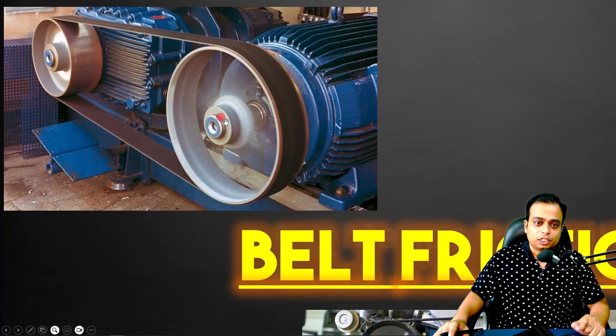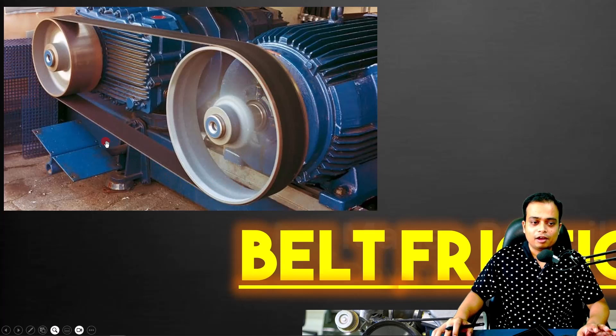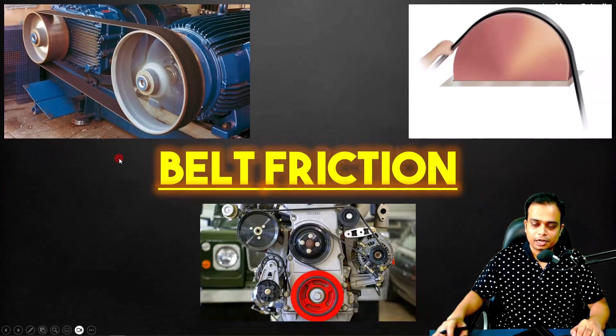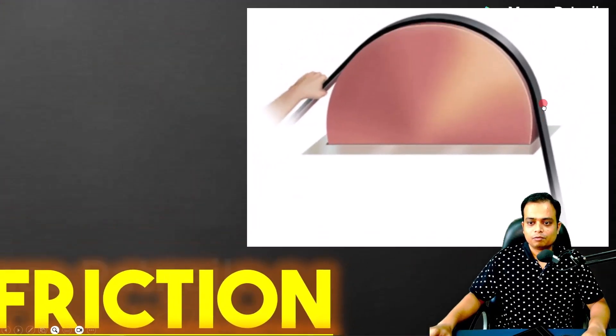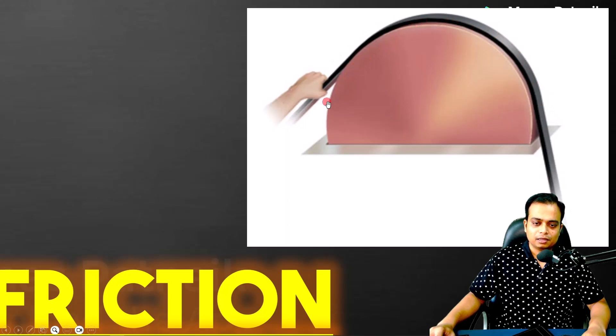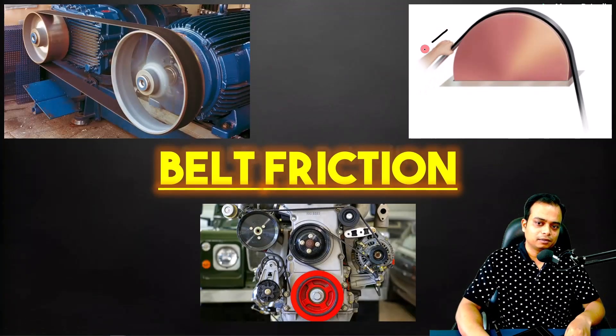This power is only transmitted because of the belt drive. We are going to explore the complete mechanics of this belt drive. If you watch carefully, take a look at this figure. It looks like a drum, and above the drum we've placed a black belt. We are going to pull this belt with our hands. Let's call this T2.